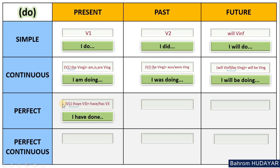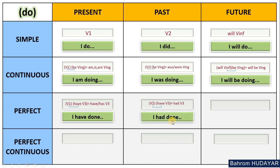What about Past Perfect? Past: verb two. Perfect: have + verb three. The second form of 'have' is 'had', so the result is 'had + verb three' — 'had done.' Full sentences: 'I had done', 'you had done', 'she had done', 'they had done.'